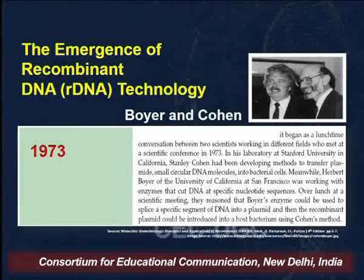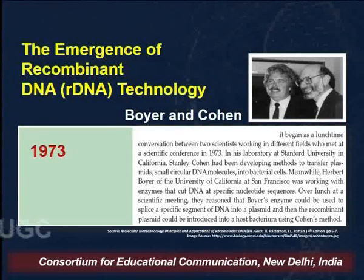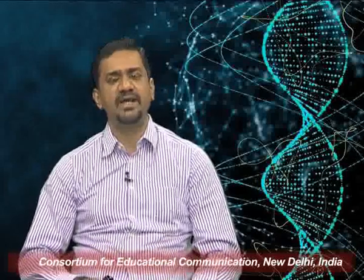Recombinant DNA technology also played a very important role, with scientists Boyer and Cohen first discussing it in 1973. They demonstrated that an insert DNA can be incorporated into a plasmid, and this recombinant DNA can be transferred into bacteria where it can be translocated and replicated, laying the foundation for recombinant DNA technology. With this, we come to the end of the first part of the lecture. In the second part we will continue with the history of further modern biotechnology techniques and their important role in the development of diagnostic kits and treatments for various disease conditions. Thank you very much.